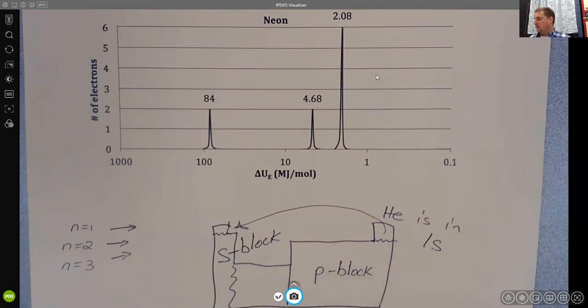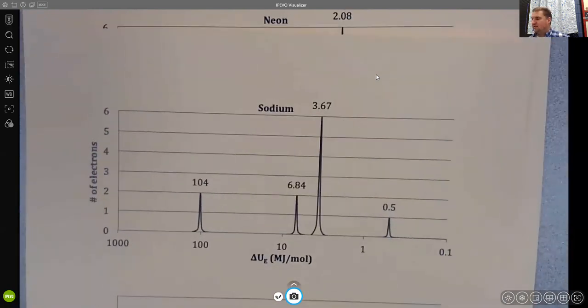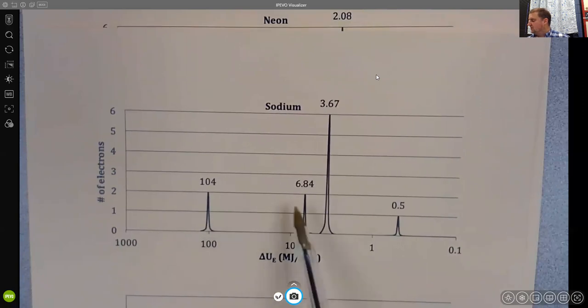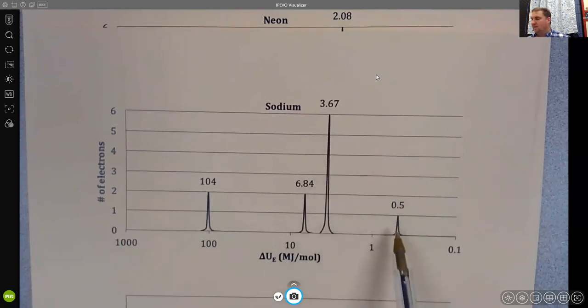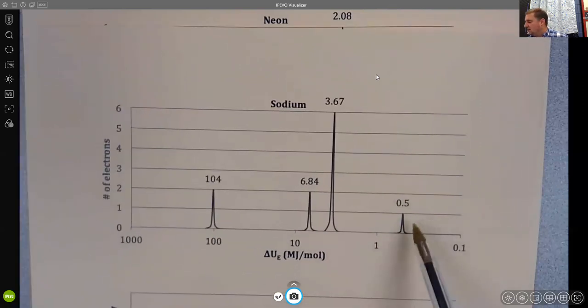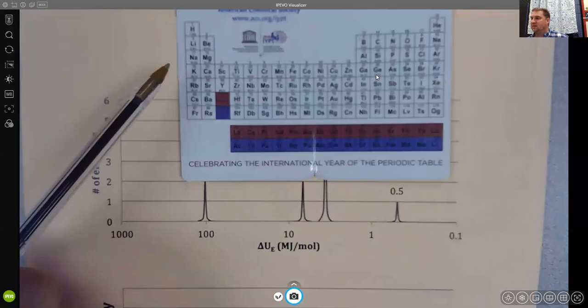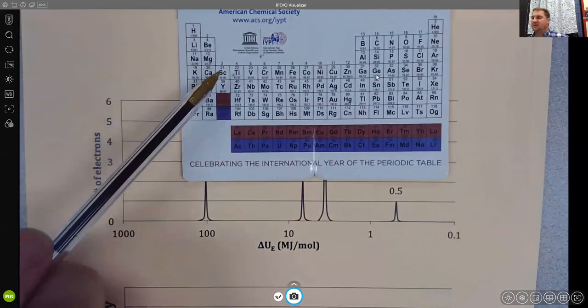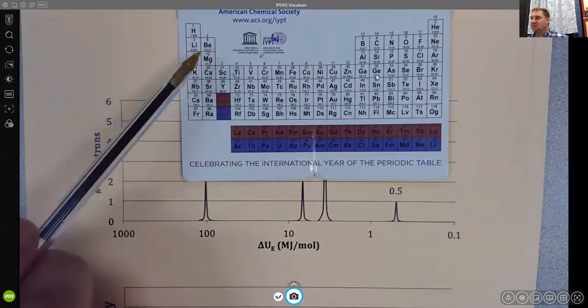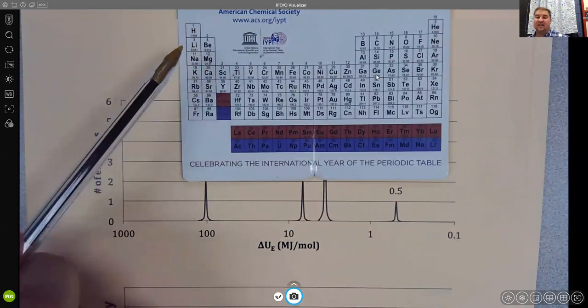And if we look at sodium, then we see that sodium has 2, 2, 6, 1, and then the electron here would be in the third shell, and because it's in the third shell, and it's the first one in the third shell, it's also in the S block, and so we would describe that as a 3s electron.